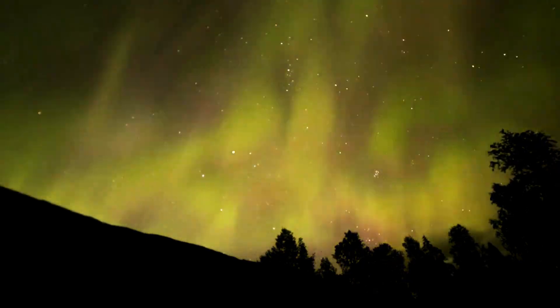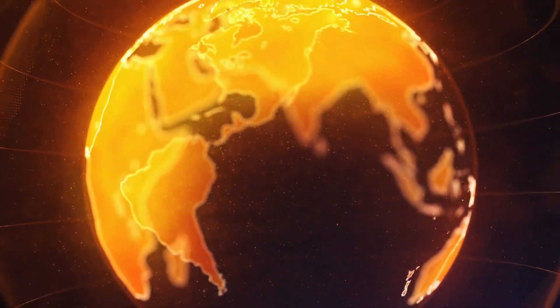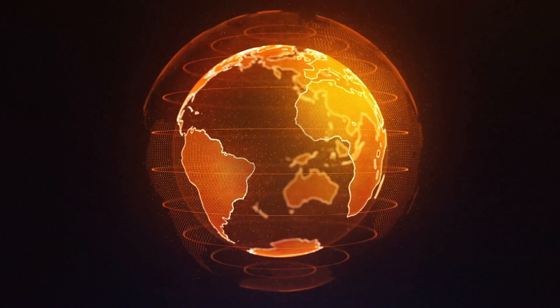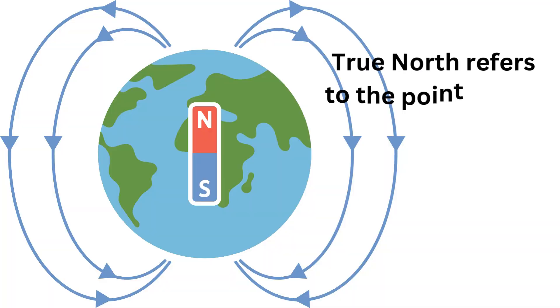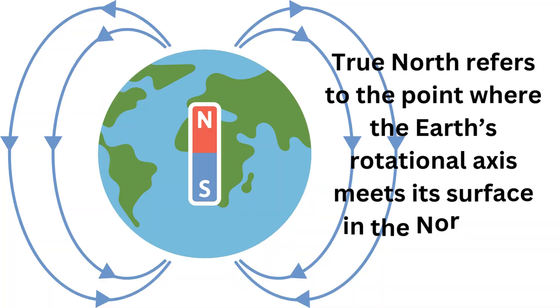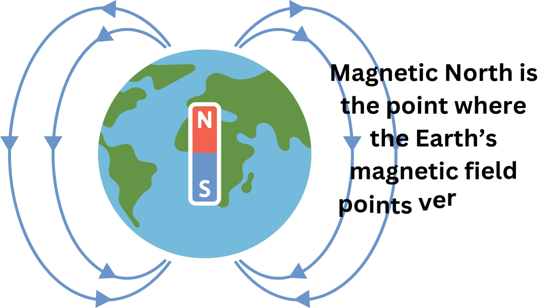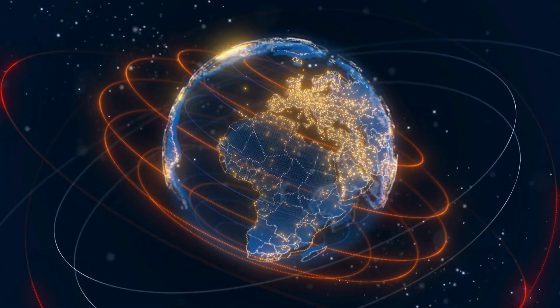Now, let's define what we mean by true north and magnetic north. True north refers to the point where the Earth's rotational axis meets its surface in the northern hemisphere. It's a fixed point on the globe, the North Pole. On the other hand, magnetic north is the point where the Earth's magnetic field points vertically downwards. This point is not fixed and actually shifts due to changes in the Earth's magnetic field.